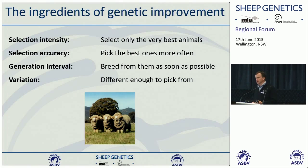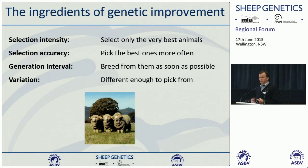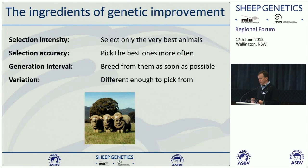Selection accuracy — what sort of a job am I doing at identifying the best animals to breed from? The better my selection accuracy, the less noise in the system, the faster I'm going to make genetic progress. Our accuracy is directly related to the rate of progress we can make.